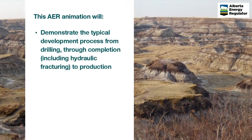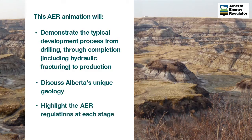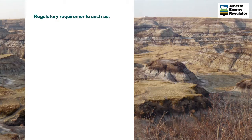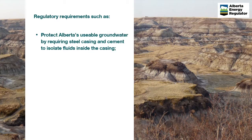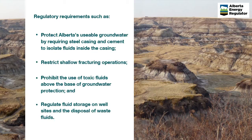This animation explains the typical process used in Alberta to drill, complete — which includes hydraulic fracturing — and bring into production a horizontal well targeting unconventional gas or oil. We will discuss the nature of Alberta's unique geology and the role it plays in the development of our unconventional oil and gas reserves. We will also describe how the AER's strict regulatory requirements protect Alberta's usable groundwater by requiring steel casing and cement to isolate fluids inside the casing, restrict shallow fracturing operations, prohibit the use of toxic fluids above the base of groundwater protection, and regulate fluid storage on well sites and the disposal of waste fluids.